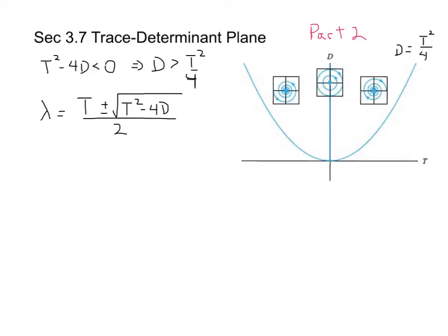Everything above that curve has complex eigenvalues. The distinction between spiral sinks and spiral sources has to do with the real part. Our eigenvalue is lambda equals t over 2 plus or minus the square root of 4d minus t squared times i. So the real part is t over 2. When t is negative, we have a negative real part, and with a negative real part we are spiraling in towards the origin — our arrows are taking us in.